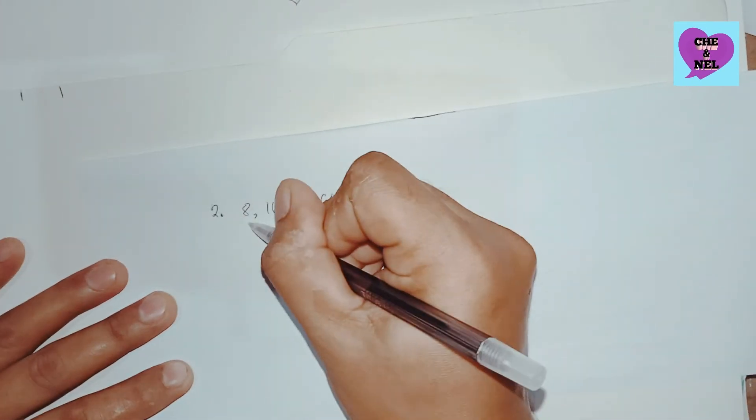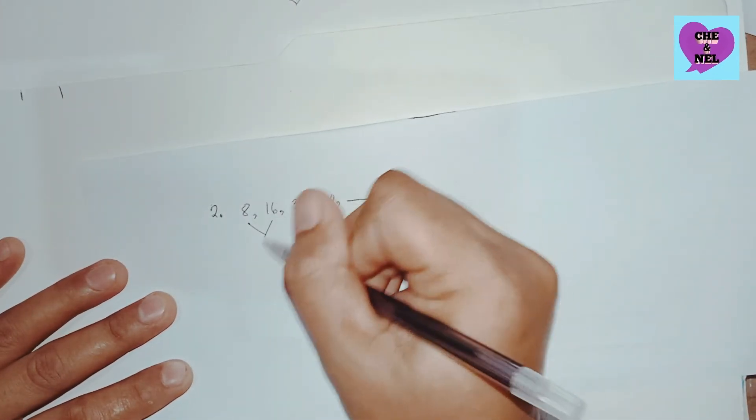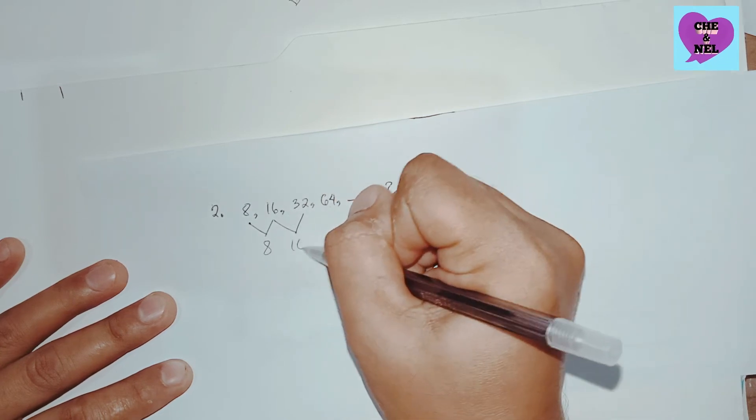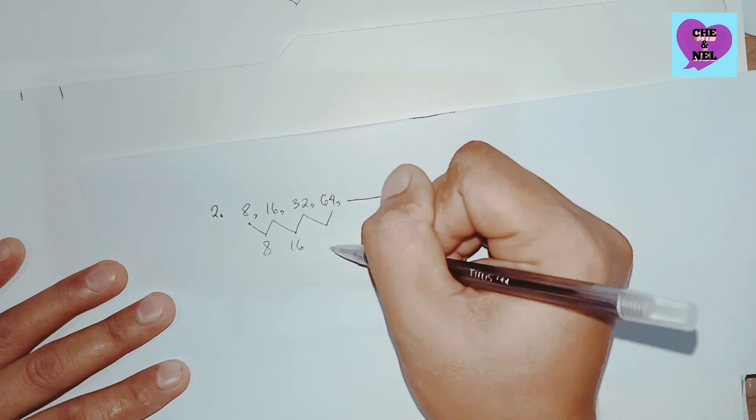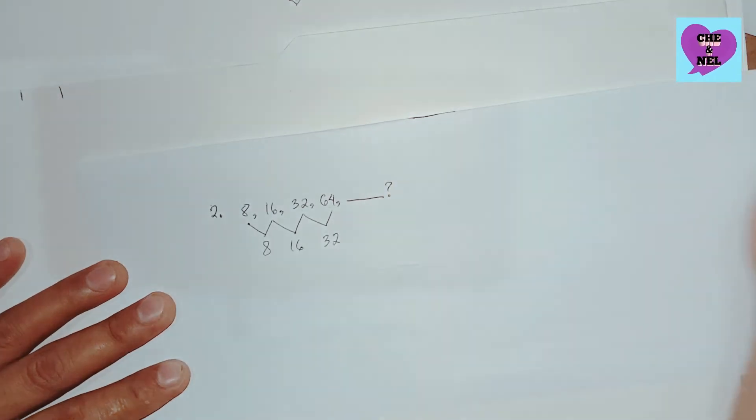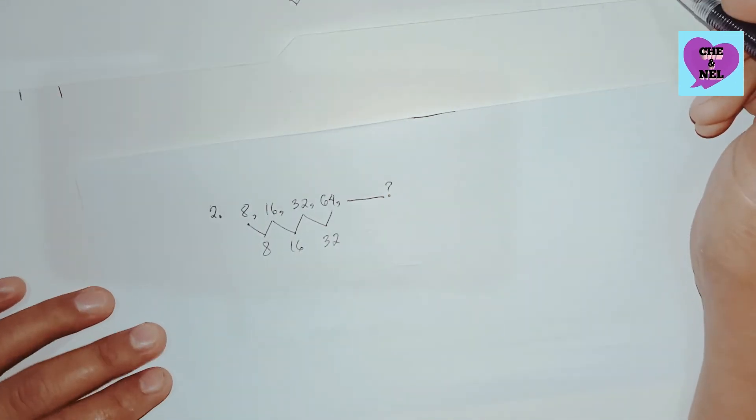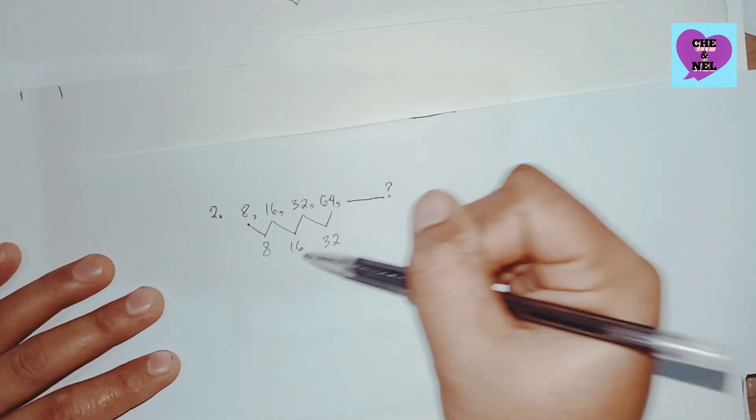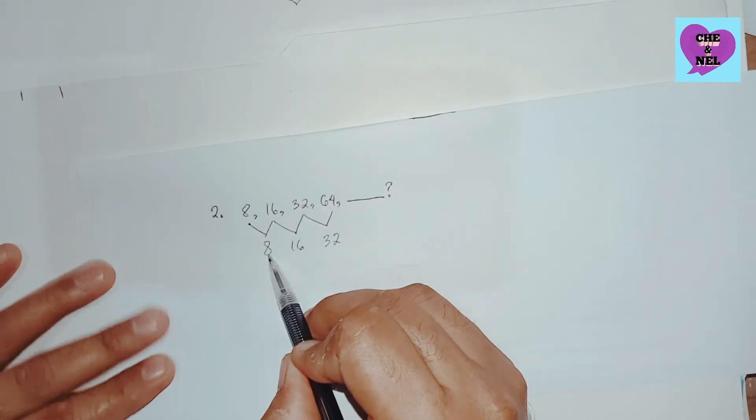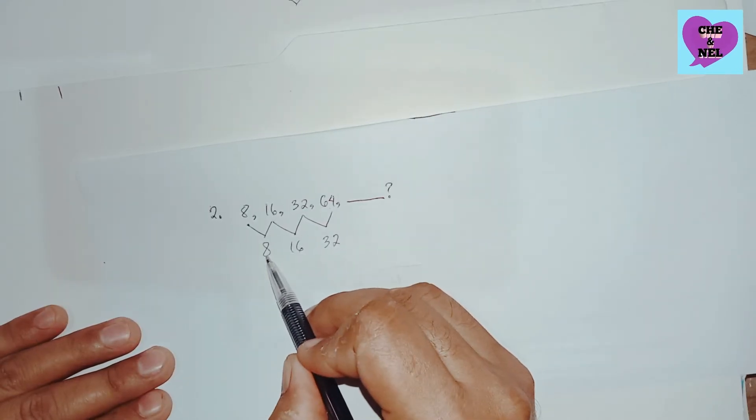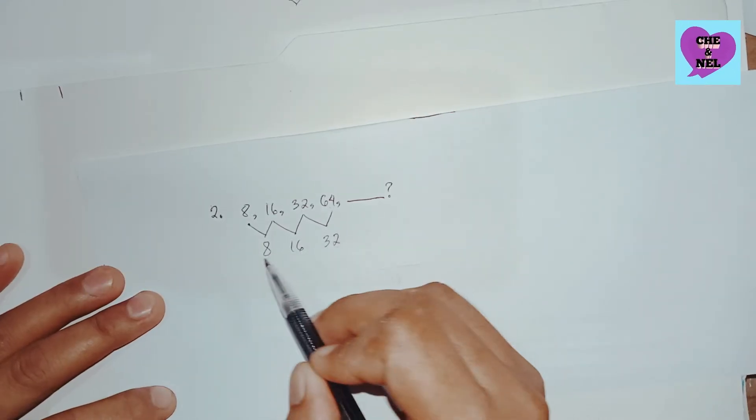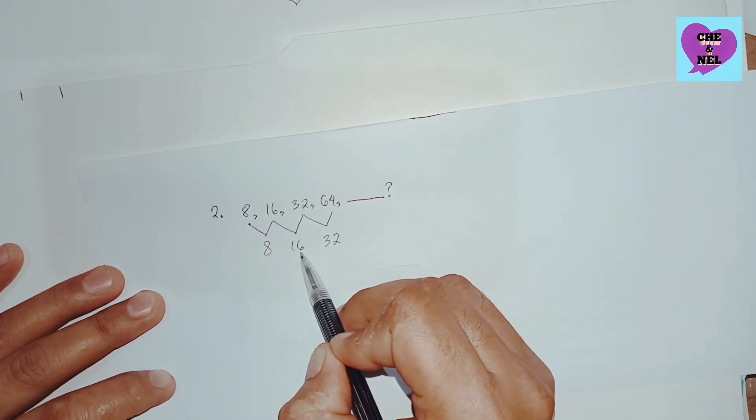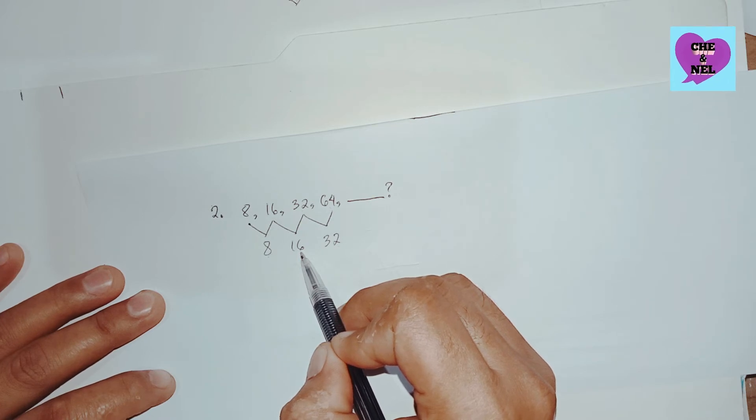So it's 8, the second one is 16, and the third one is 32. As we have here in their common difference, it is obviously stated that we have 8, 16, and 32. Sixteen is a multiple of 8 and 2.